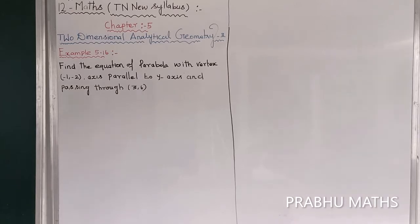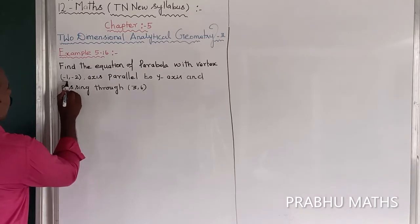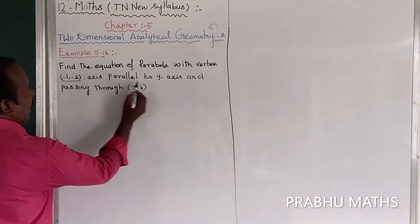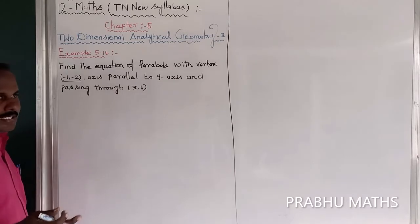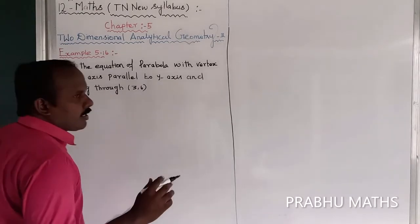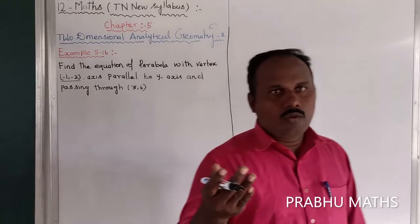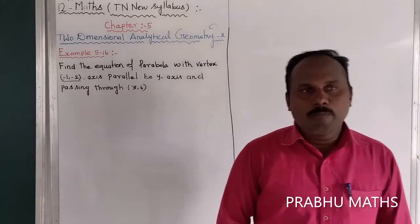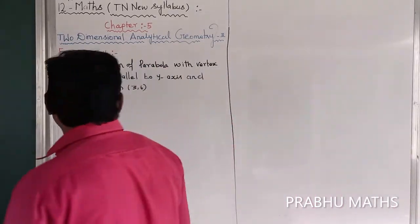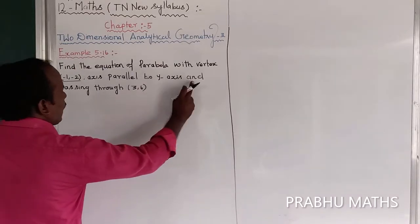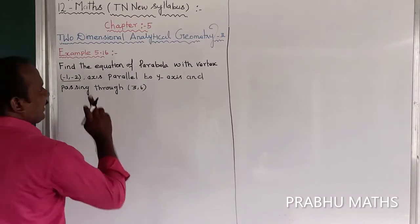Example 5.16: Find the equation of the parabola. Given vertex (-1, -2), axis parallel to y-axis. Axis parallel to y-axis means one option is an upward open parabola and one option is a downward open parabola. The axis parallel to y-axis is confirmed. The parabola is passing through the point (3, 6).